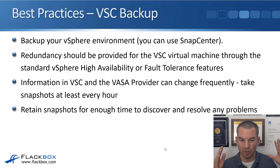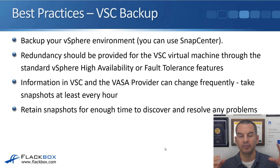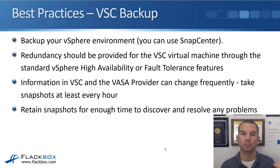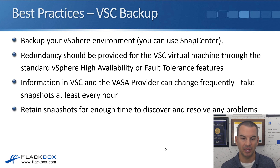For backup, back up your vSphere environment — you can use SnapCenter to do that. Redundancy should be provided for the VSC virtual machine through the standard vSphere high availability or fault tolerant features. The VSC runs as a virtual machine and you can use VMware's built-in high availability or fault tolerance to provide redundancy for it. Information in VSC and the VASA provider can change frequently, so take snapshots at least every hour and retain snapshots for enough time to discover any problems and also resolve them.